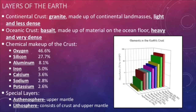Besides the asthenosphere, which I have already mentioned, we have one more special layer: the lithosphere. The lithosphere contains the crust and uppermost mantle. Where the asthenosphere ends, the lithosphere begins. All of the rocks and soils we see and study are part of this layer.